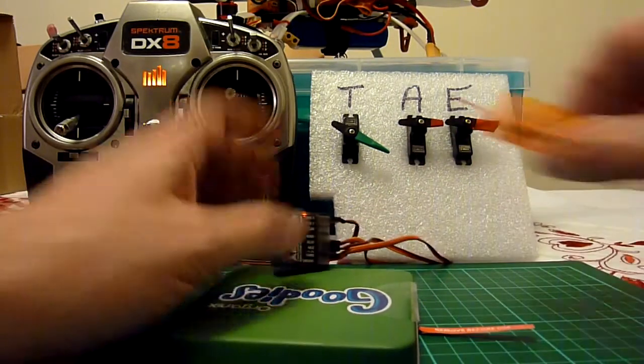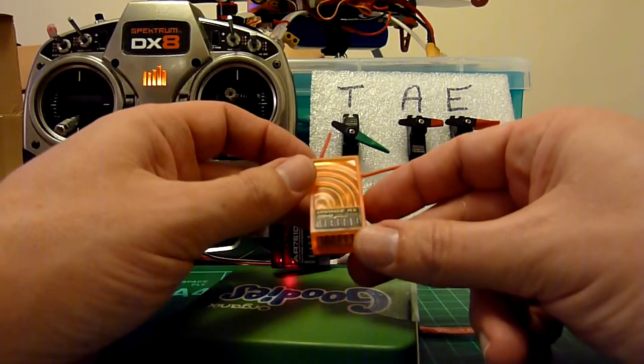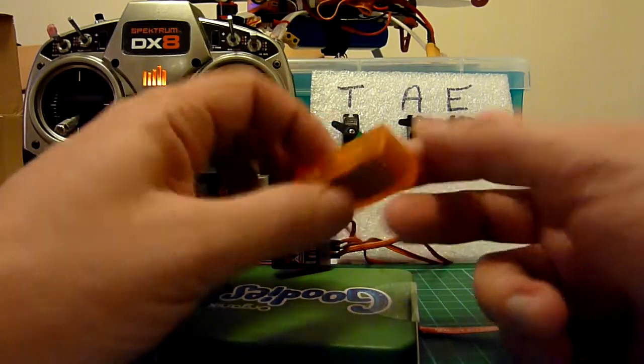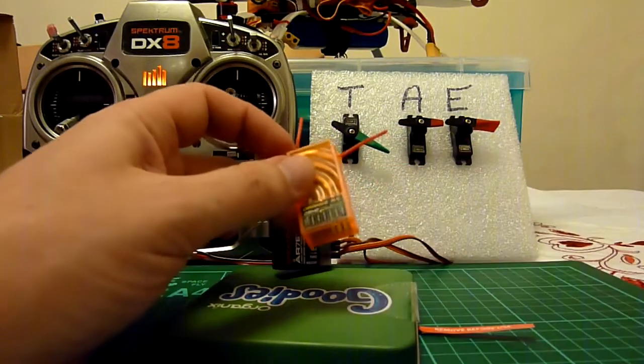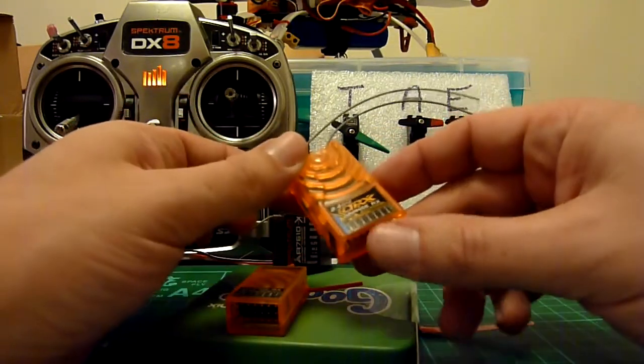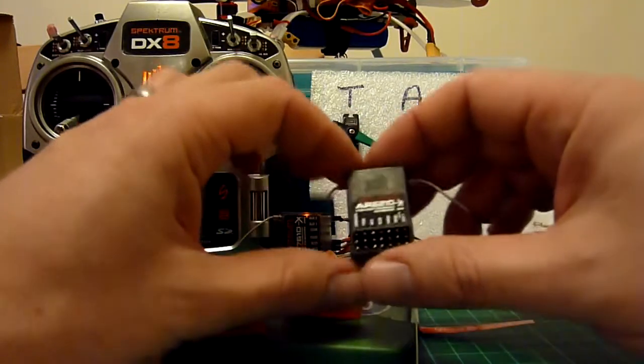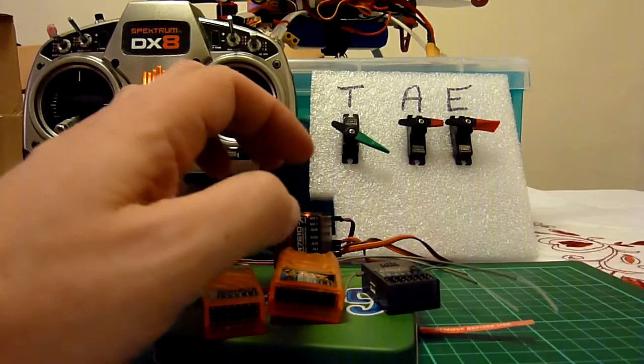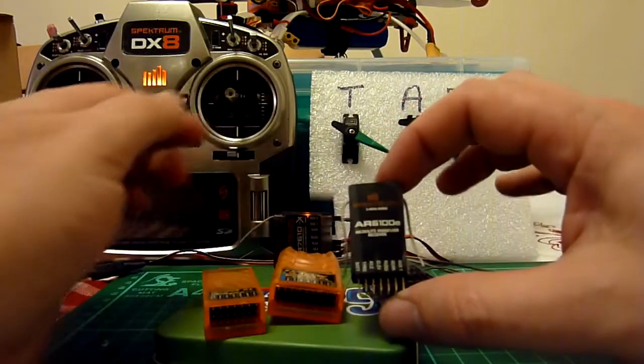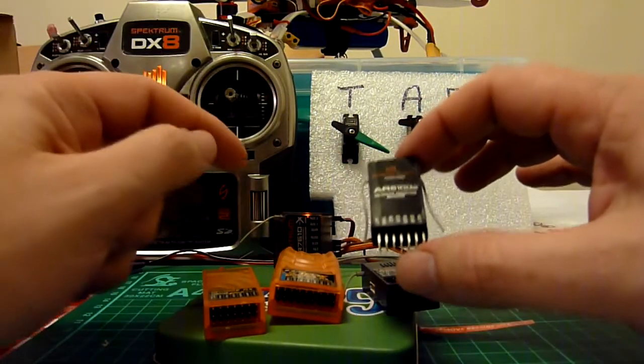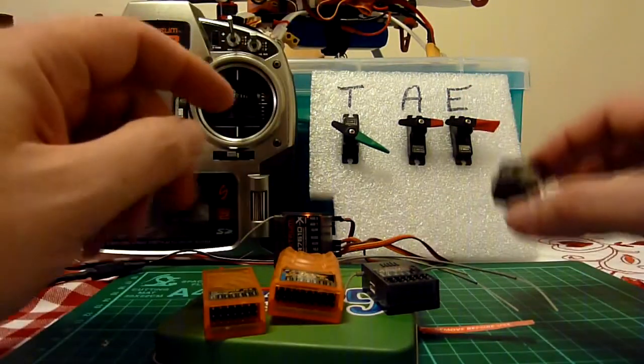I'll just quickly run through some other receivers I've got. I've got an orange, this is the cheap orange receiver, the cheap 6 channel orange receiver. This is the R800X which is the 8 channel orange receiver. This is a Spectrum AR6210 and this is a Spectrum AR6100E. I will just quickly run through them showing both modes.